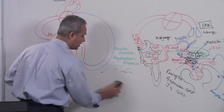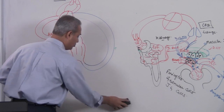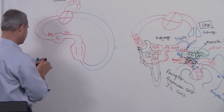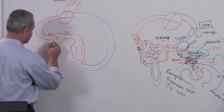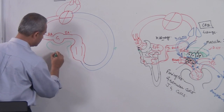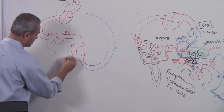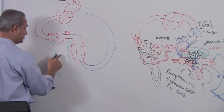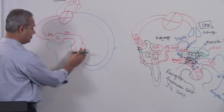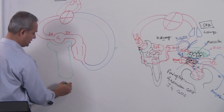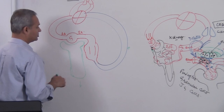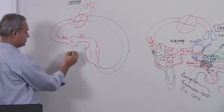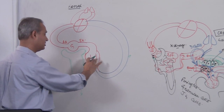In the nephron, we have Bowman's capsule, Bowman's space, tubular proximal and distal convoluted tubules, the peritubular capillaries, and the urinary area — which would be out of the body. This is a closed circuit for the blood, but substances come out from the glomerulus and are reabsorbed in the peritubular capillaries.